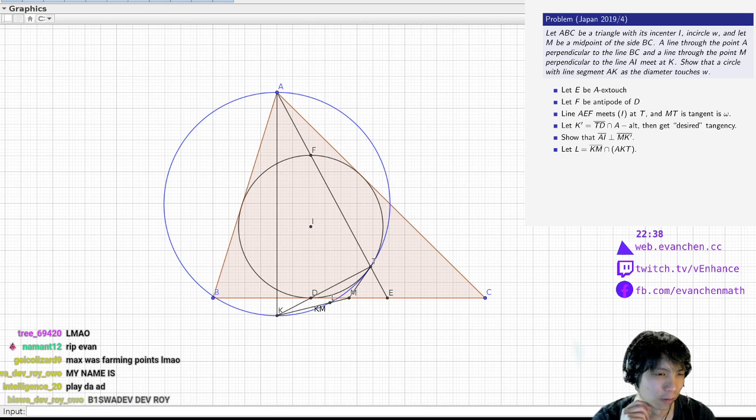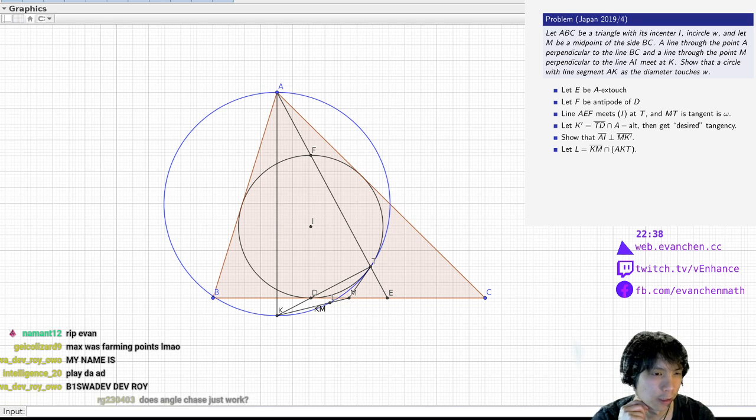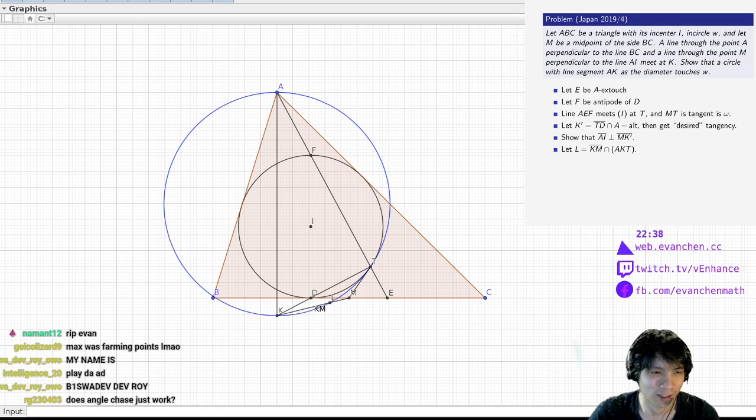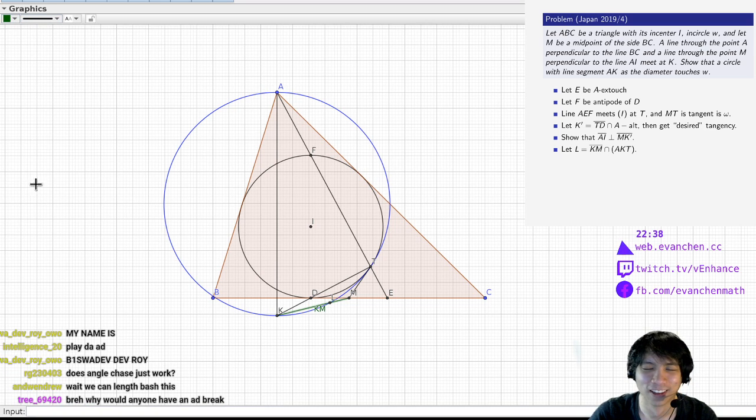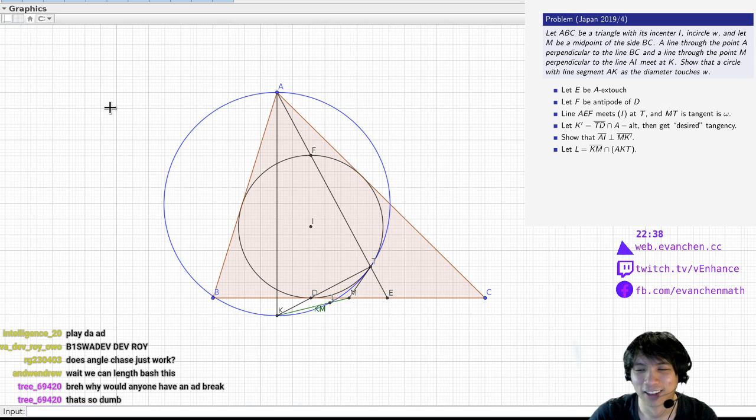So I'll solve this problem, then I'll take an ad break because I want to stand up anyways. Then we'll run the other problem, and then I will increase the cost of the 180 ad break by a factor of two. Oh my god, someone actually got enough points. I mean, I'll keep my word, but like, what the heck.